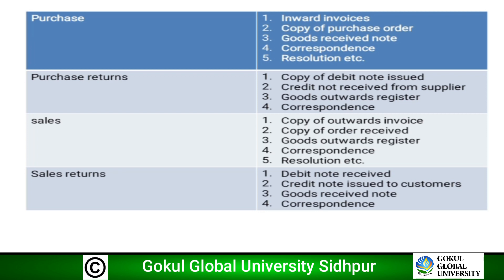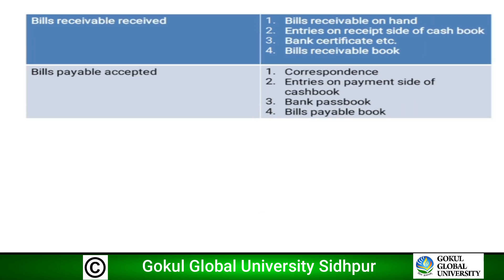The next transaction is purchase return; vouchers include first copy of debit note issued, credit note received from supplier, goods outward register, and correspondence. For sales, vouchers are copy of outward invoice, copy of order received, goods outward register, correspondence, and resolutions. For sales return: debit note received, credit note issued to customers, goods received note, and correspondence.